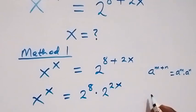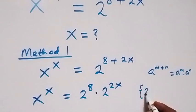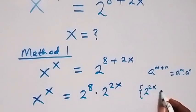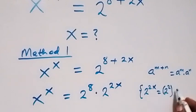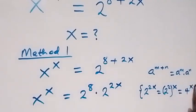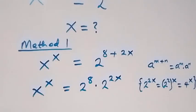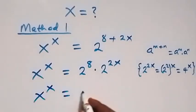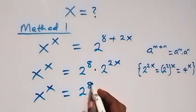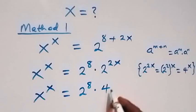Then from here, 2 raised to power 2x can still be written as 2 raised to power 2, and raised to power x, which is seen as 4 raised to power x. So this now becomes x raised to power x equals to 2 raised to power 8 times 4 raised to power x.